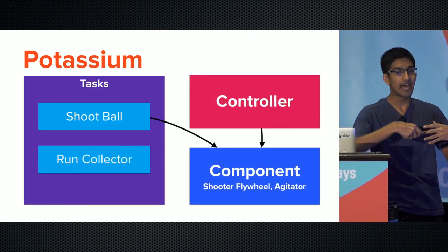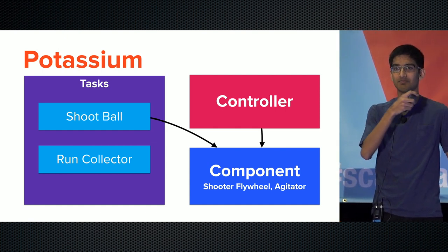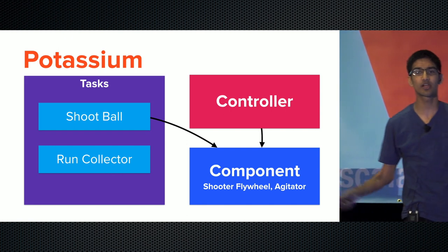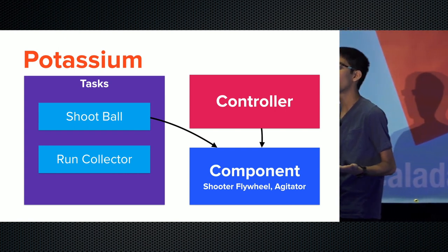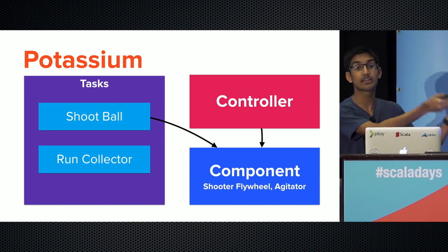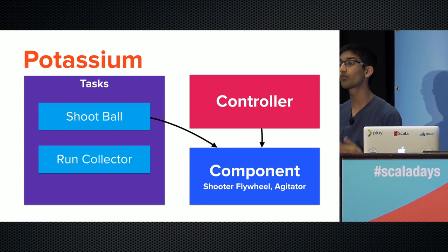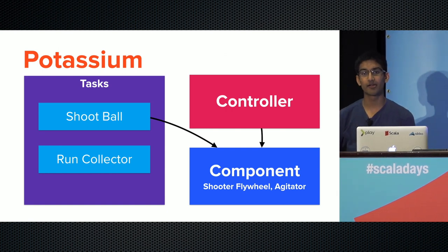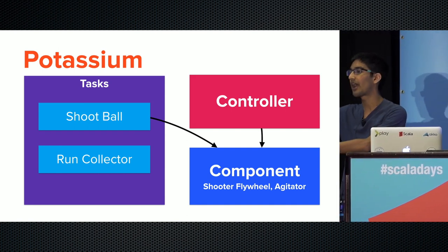With your tasks — tasks actually perform the action. The purpose of a task is to take the controller and provide it to the component. A component represents a subsystem like your shooter, flywheel, or agitator — it's a mapping from an input signal to an output to actuator. Your shooter flywheel component takes in the voltage to apply to each side of the flywheel and communicates with the motor controllers. Controllers are what we care about: you take input data, apply transformations to produce a stream of control values to output through your component.